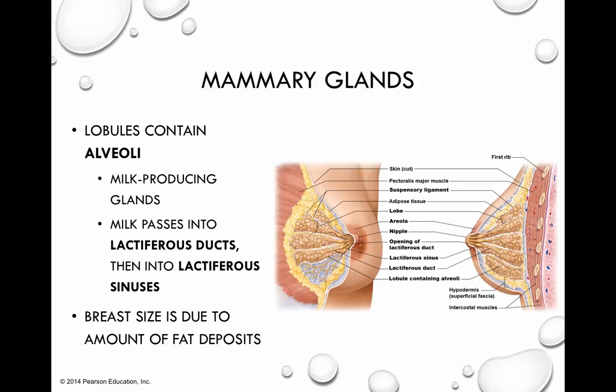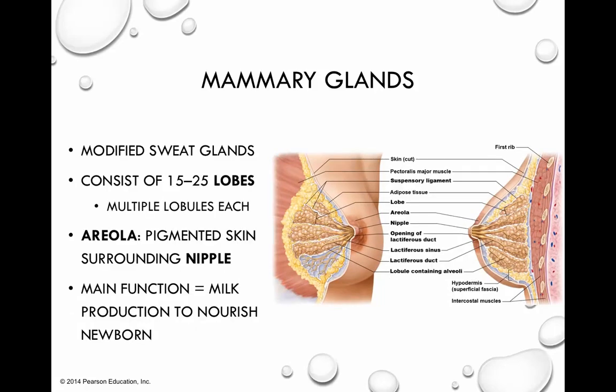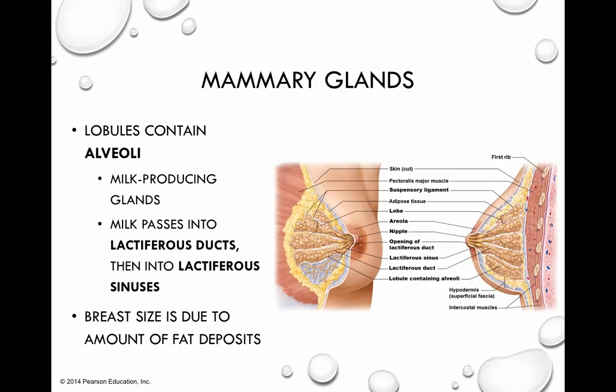Something to keep in mind is that the structure of the mammary gland — the number of lobes — is essentially the same across all females. What plays the biggest role in differences in breast size is the amount of adipose tissue contained within the breast, providing nutrients, cushioning, and protection to the mammary glands.